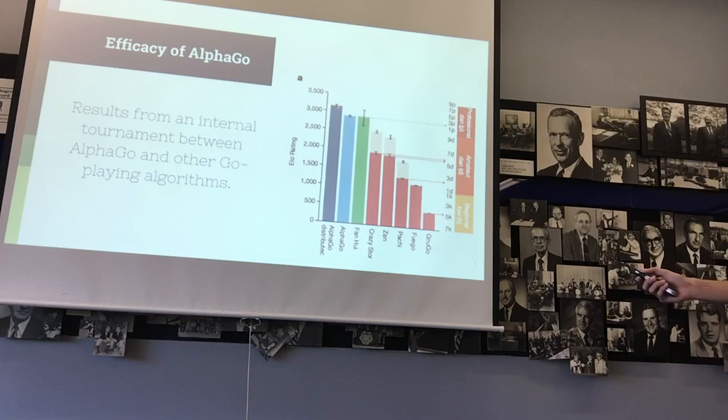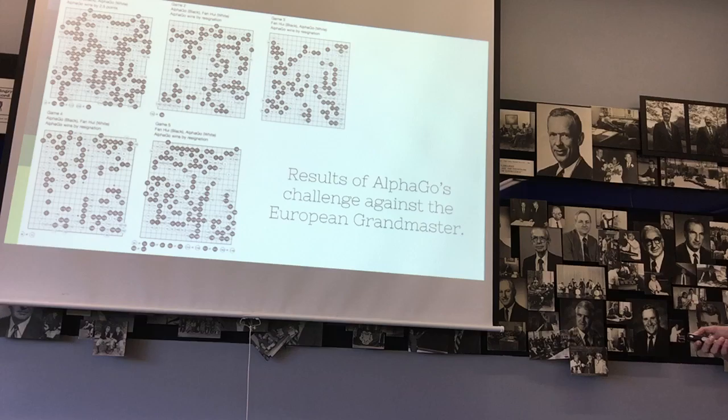And the green is actually the European World Champion. So, after they had tested this AlphaGo, after they had fine-tuned it, they actually challenged the European World Champion to a five-game series and they were able to beat him 5-0. So, here, again, this is very confusing, but this is the final board state of each of those five matches. Just to give you guys an example of how complex these games get.